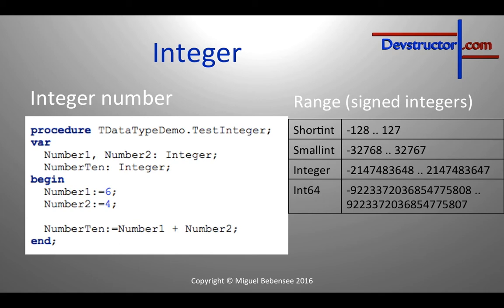Bit size is an important keyword, because the range of an integer is defined by its bit size. In this table I have summarized the most important integers. Shortint has a bit size of one byte and can only represent minus 128 to 127. Smallint is greater. The plain integer type is a bit different because in some compile modes of Free Pascal it could be a smallint, but normally when developing for Windows, Linux, Macintosh, or Raspberry Pi, we are talking about a 32-bit integer. There is also the 64-bit integer, which I often use in databases.